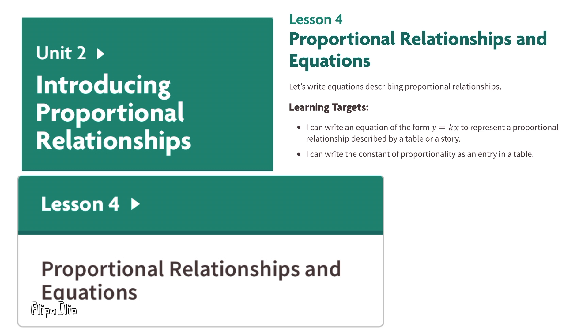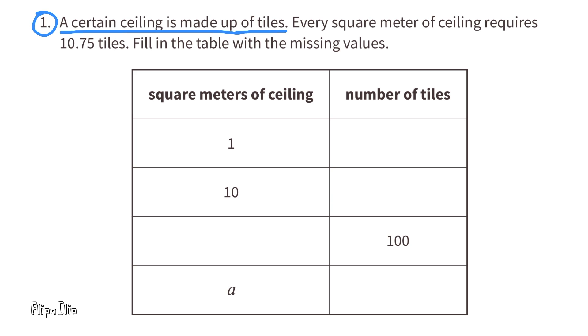7th grade unit 2 lesson 4: proportional relationships and equations. Number 1. A certain ceiling is made up of tiles. Every square meter of ceiling requires 10.75 tiles. Fill in the table with the missing values.